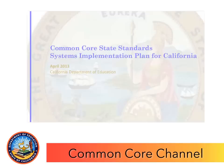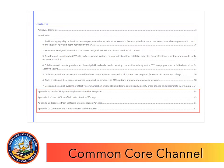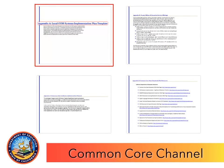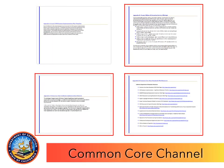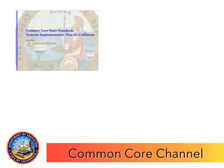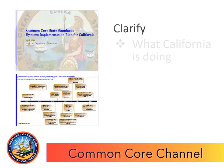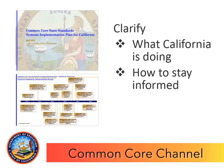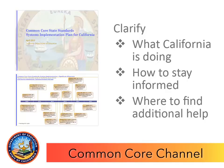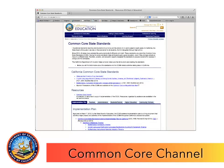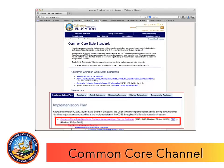The Common Core plan also includes appendices with helpful tools and information. One appendix provides an LEA planning template organized around milestones of Common Core systems implementation. Additional appendices contain information detailing professional organizations and stakeholder groups that assist LEAs with developing their own local plans. The Common Core State Standards Systems Implementation Plan for California, along with the Significant Milestones timeline and other Common Core implementation tools, clarify what California is doing, how to stay informed, and where to find additional help. This plan is available to download on the CDE Common Core State Standards webpage under the Implementation Plan tab.